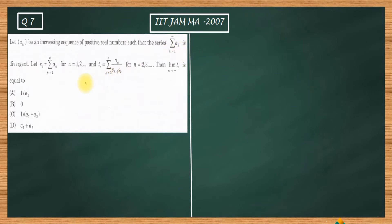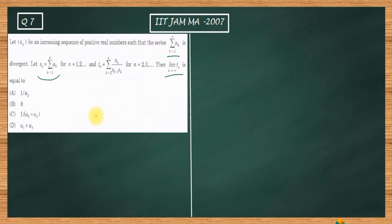Now, let sₙ be the partial sum for the given series. They are also defining tₙ as a composite sum, and we need to find the limit as n goes to infinity of tₙ. This is the problem we need to solve.